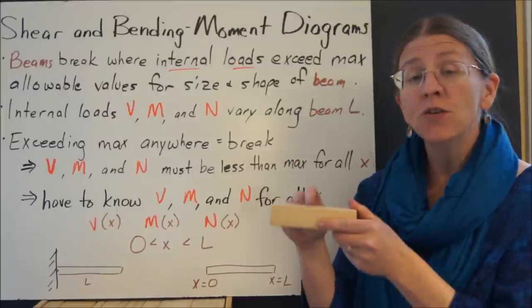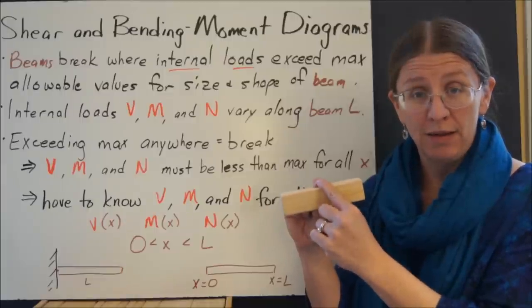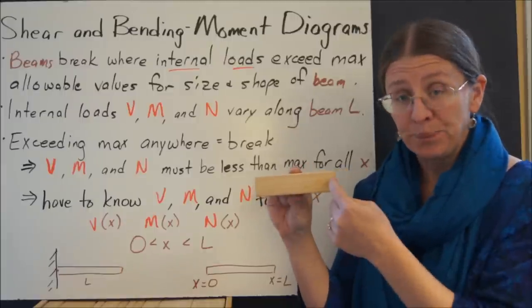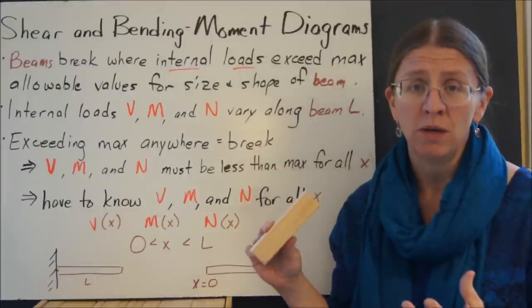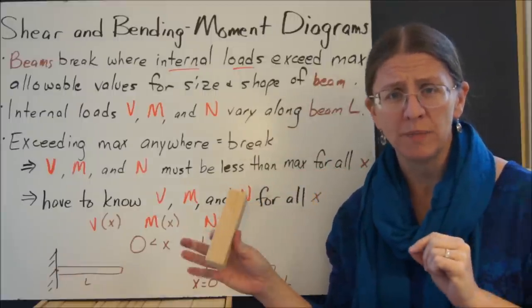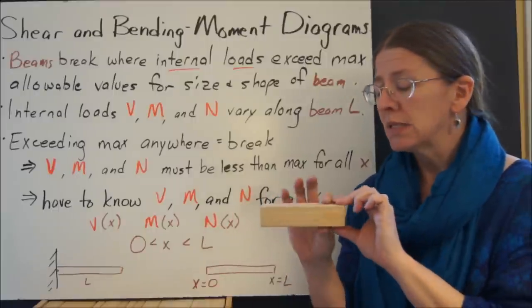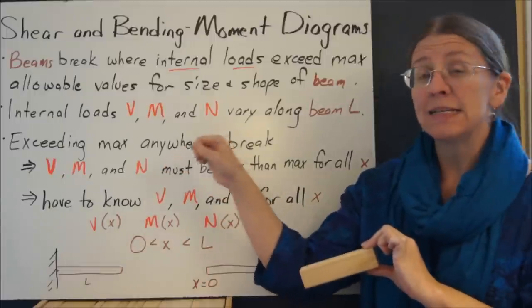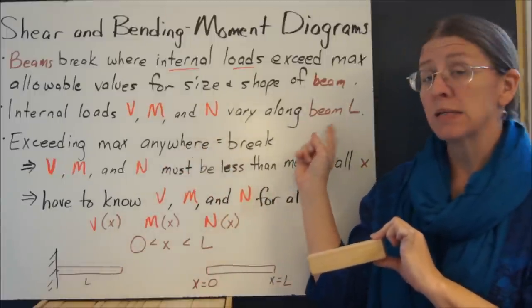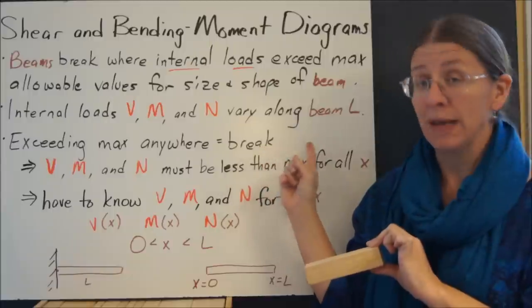A beam will break when the internal loads get too big. If it breaks anywhere, then it broke. You can't break a little bit here and not a little bit there and be okay. To say that I want a beam to not break, I need to be able to say that exceeding a maximum value, the maximum internal load anywhere, will make it break.